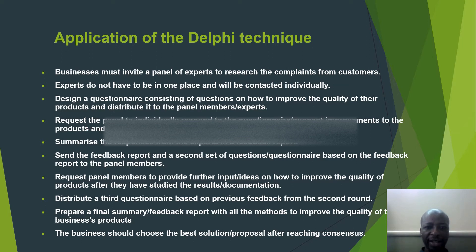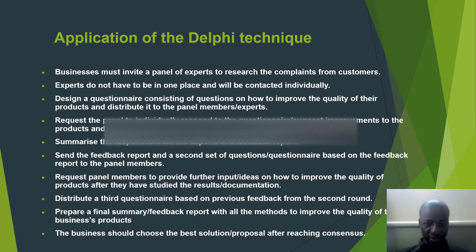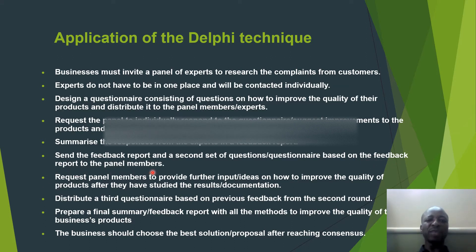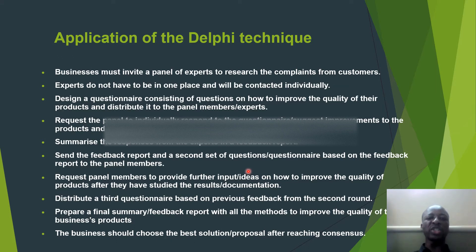Request the panel to individually respond to the questionnaire or suggest improvements to the products, and return it to the previous questions. Then summarize the responses from the experts in a feedback report. Send the feedback report and a second set of questions or questionnaire based on the feedback report to the panel members. This means you have a second round whereby you give them another set of questions to gather more data, more information, or more solutions.